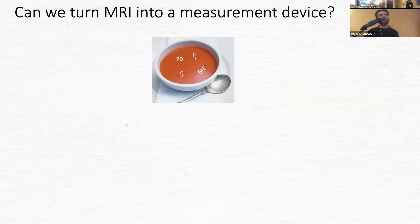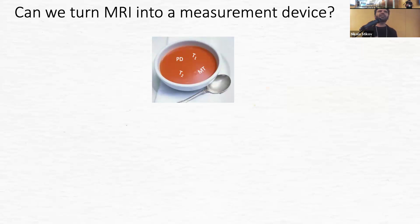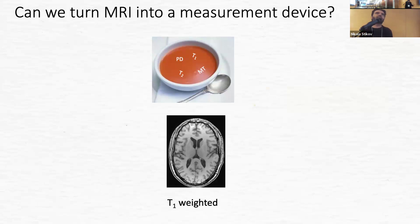I usually use the analogy of conventional MRI as a spoonful from an alphabet soup of contrast mechanisms — you have T1 contrast, T2 contrast, proton density, magnetization transfer. Each has different underlying physics, but in the end they are the contrast mechanisms that give you the picture. We call it T1-weighted if it's dominated by the T1 parameter in the measurement.